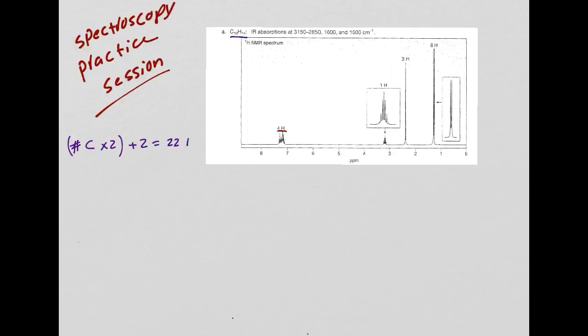That would be 22 hydrogens if I had nothing but single bonds, but how many hydrogens do I actually have? I have 14 hydrogens. That means I'm missing 8 hydrogens to end up with 14. Now remember, when you're missing a lot of hydrogens, the number one thing that comes to mind is you probably have a benzene ring, because a benzene ring has a high hydrogen deficiency. Also, there is no oxygen and no nitrogen here - that's good, that's already a lot of information just from the formula.